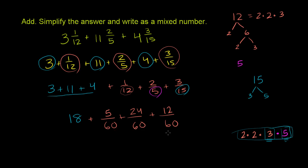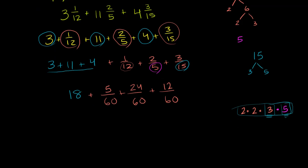And now we have the same denominator. We are ready to add. So let's do that. So this is going to be 18 plus, and then over 60, we have 5 plus 24, which is 29. 29 plus 12, let's see, 29 plus 10 would be 39, plus 2 would be 41.